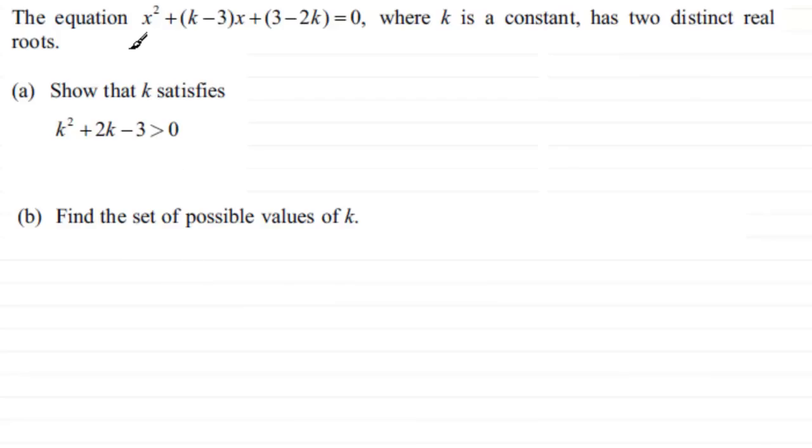Well what we have then is a quadratic equation, the equation x squared plus (k minus 3) times x plus (3 minus 2k) equals 0, where k is a constant and we're told it has two distinct real roots. In part A we've got to show that k satisfies this inequality here, k squared plus 2k minus 3 is greater than 0. And then we're going to go on to find the possible set of values of k.